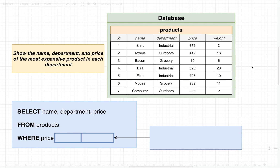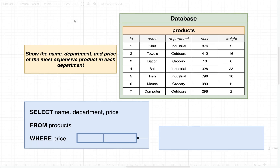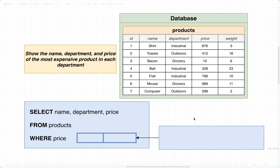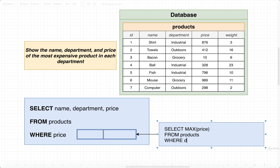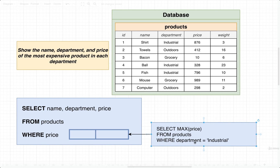Now that we understand what we're going for, let's imagine how we would write this out using a subquery. The subquery is not going to be what we eventually end up with, but I just want to put something together to start discussion about what a correlated subquery is. So I'm going to write a subquery that selects the maximum price from products where the department is equal to industrial. Notice that I've got a hard-coded department inside here, so this is not extremely useful, because eventually we want to see each department, not just industrial.